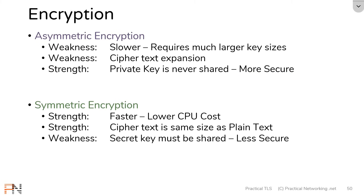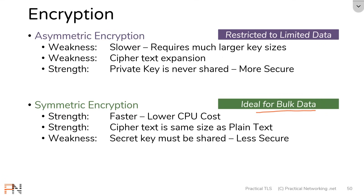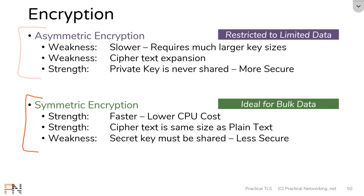These strengths and weaknesses make symmetric and asymmetric encryption ideal for different usages. Symmetric encryption is ideally used for bulk data protection — if you want to send a large amount of data from one party to another, use symmetric encryption. It's faster and more efficient, though a little less secure. If you only need to send a smaller data set, go ahead and use asymmetric encryption because it's more secure, and since you're only encrypting a small amount, you won't take a big hit from its slowness or ciphertext expansion. In the next lesson, I'll show you how we use the strength of one to compensate for the weaknesses of the other.